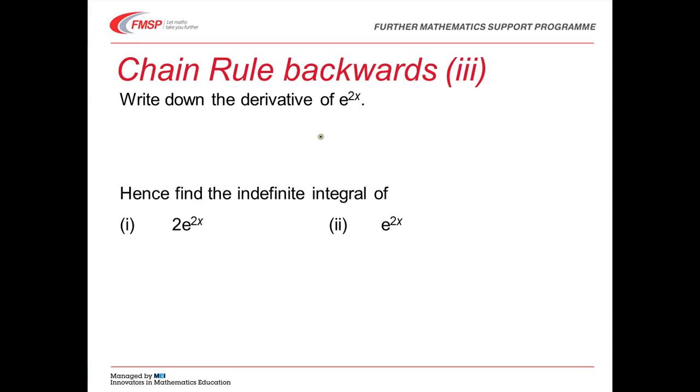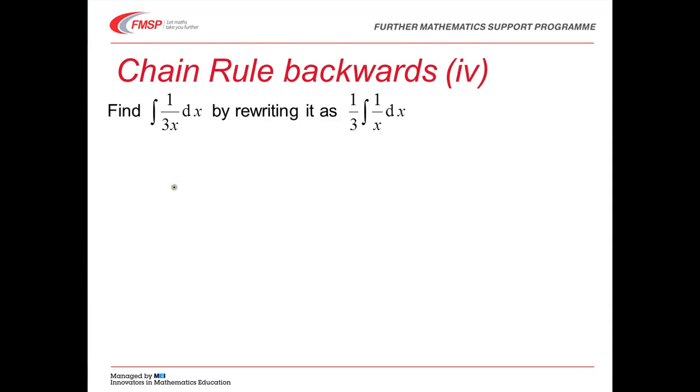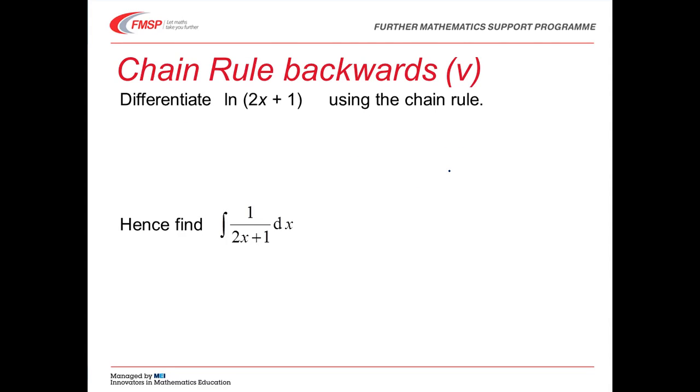Okay, let's do some examples. We're thinking of the chain rule backwards again. If we differentiate e to the 2x, we'll get 2 e to the 2x. So the indefinite integral of 2 e to the 2x is e to the 2x. And if we want just the integral of e to the 2x, we'll need a half of that. Okay, the integral of 1 over 3x is the same as 1 third of the integral of 1 over x. That's 1 third of log of x. Don't forget the modulus signs. And of course, the plus constant.